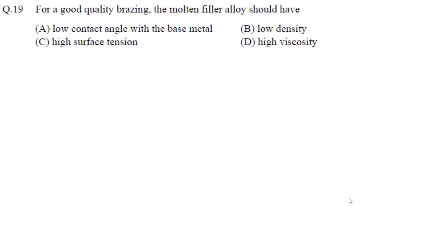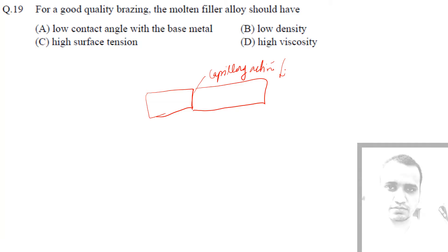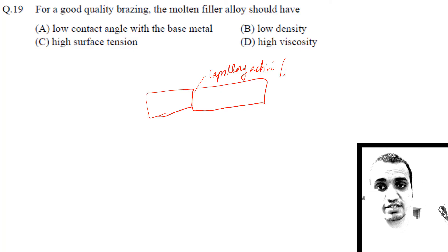In the case of brazing, suppose there are two pieces with a gap. By the mechanism of capillary action, the liquid metal flows through that gap. For capillary action to occur, we require a low contact angle. A low contact angle means better wettability, which allows the filler to penetrate through the joint.